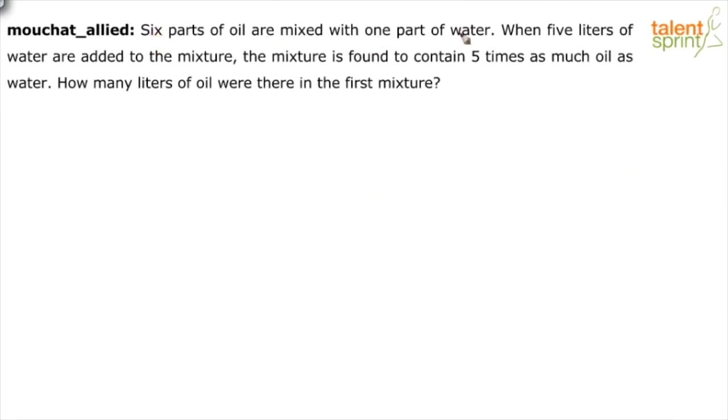Six parts of oil are mixed with one part of water. When five liters of water are added to the mixture, the mixture is found to contain five times as much oil as water. How many liters of oil were there in the first mixture?